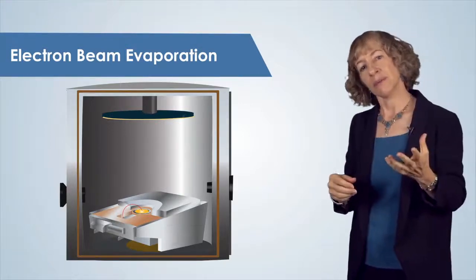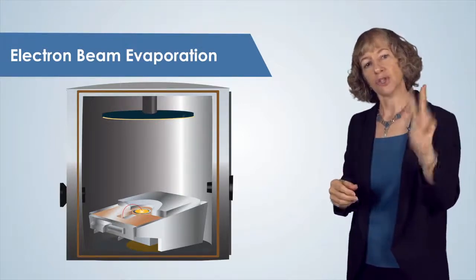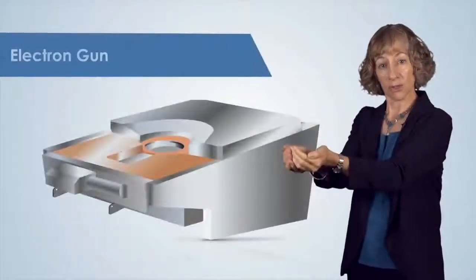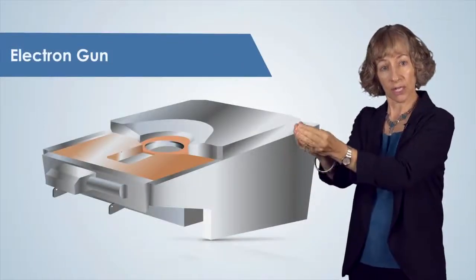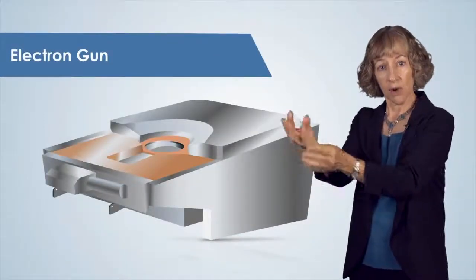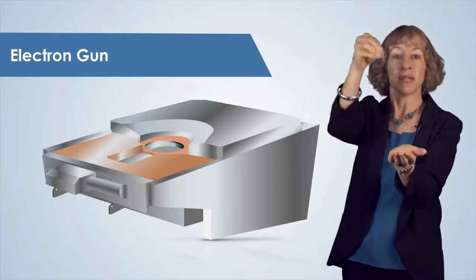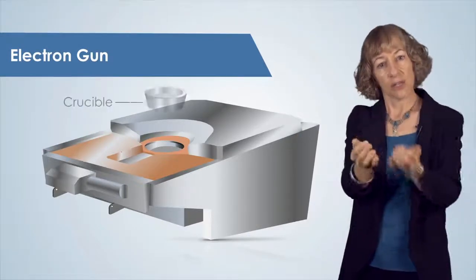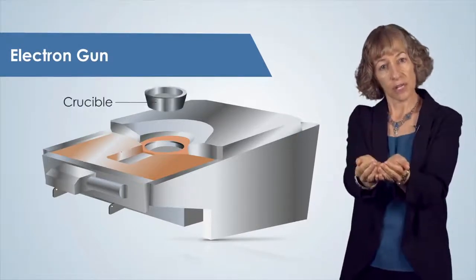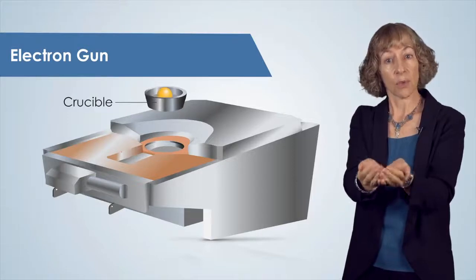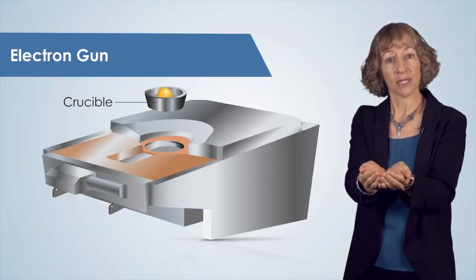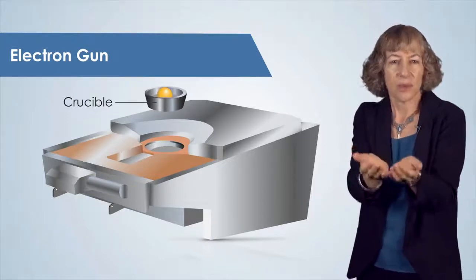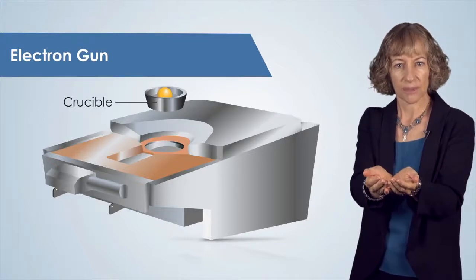An e-beam evaporator has two main components. First is the electron source or electron gun, which produces the beam of electrons. Second, the crucible is where the source material that we want to evaporate is contained. This is like the boat for thermal evaporation.